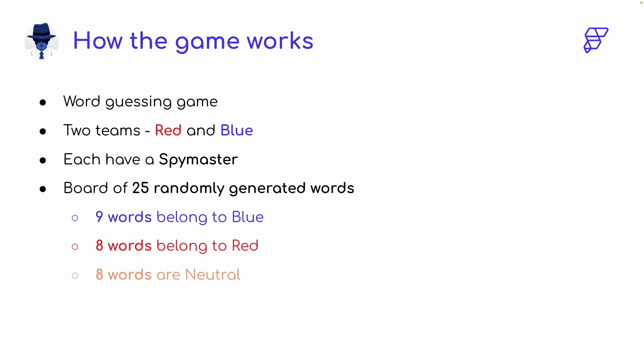Let's say you're the blue spy master. You have to give out a one-word clue along with a number, which is the number of words you think relate to that clue — and the clue has to be just a single word. Your team then has to guess the correct words that belong to your team. If you guess any of the red team's words, they get the points. The winner is the team who guesses all their correct words first.